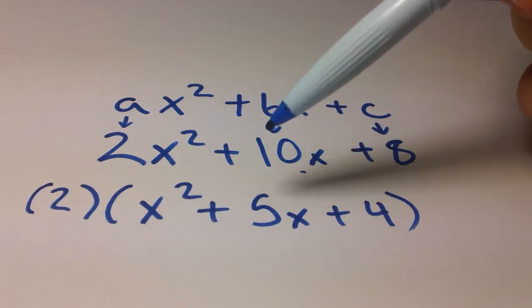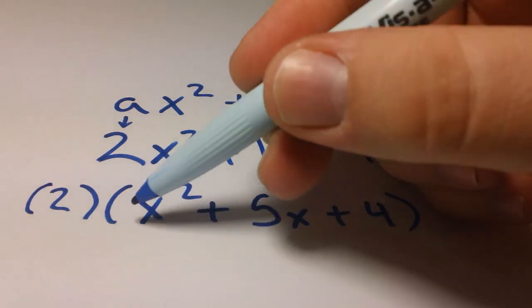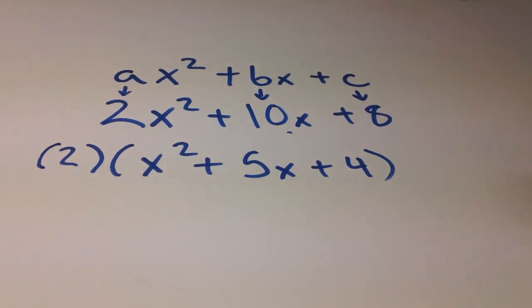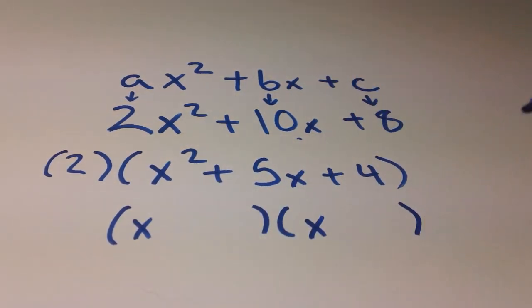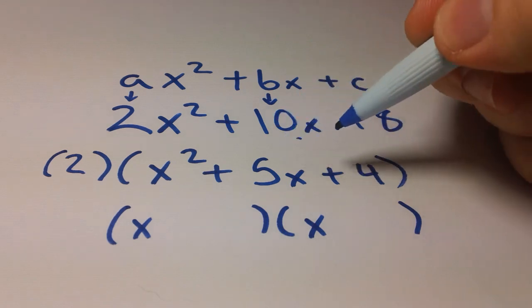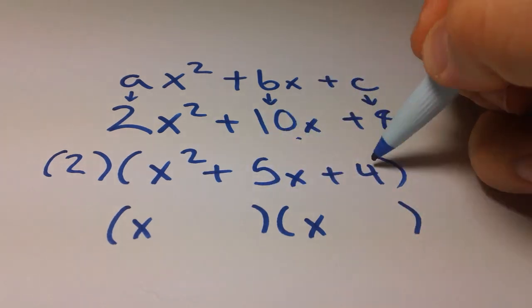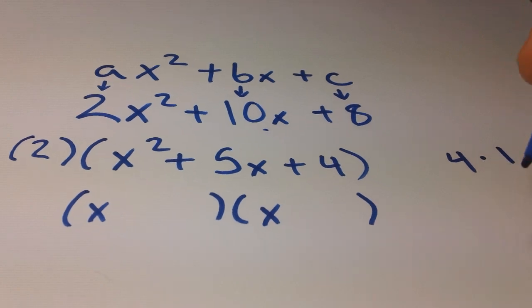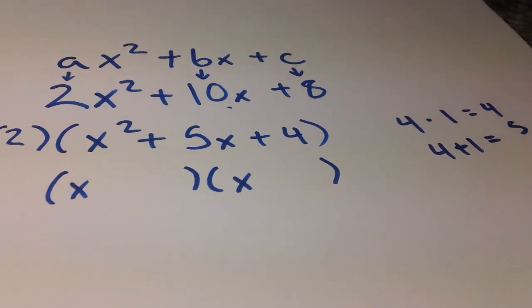Now, once we do that, we can factor this like we would just about any other quadratic equation, because we now have that a value equal to 1. So in that case, we break it down, we get our two quantities going with an x in there, and we figure out what numbers, what factors of c add up to b. Factors of 4 that add up to 5, well, 4 times 1, right? So 4 plus 1, 4 times 1, 4. 4 plus 1, 5. I know, I'm off camera.